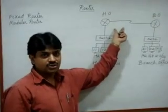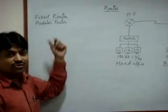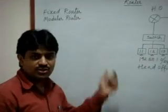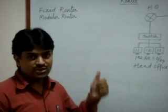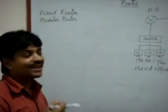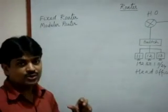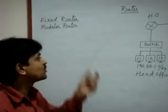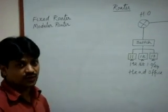Routers are classified into two types: fixed routers and modular routers. In a fixed router, all components are fixed — we cannot replace or add extra interfaces. In a modular router, components and interfaces come in modules, so we can replace interfaces and add extra interfaces according to requirements.